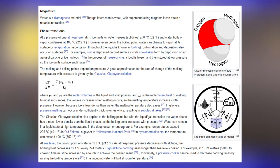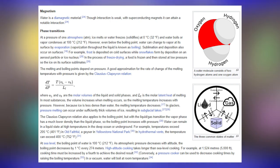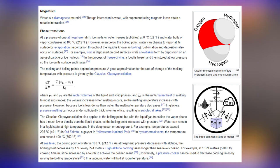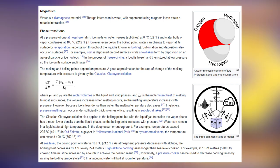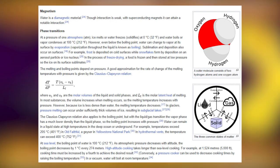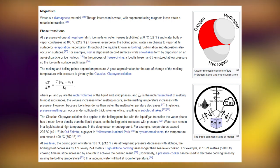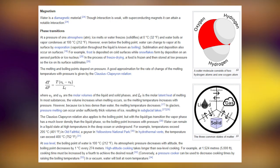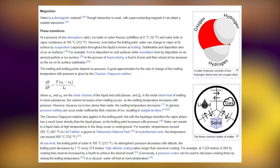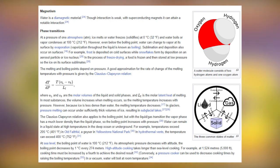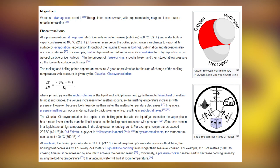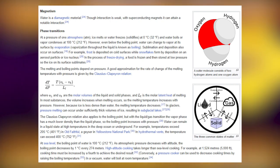The melting and boiling points depend on pressure. A good approximation for the rate of change of melting temperature with pressure is given by the Clausius-Clapeyron relation: dT/dP = T(VL - VS)/LF, where VL and VS are the molar volumes of the liquid and solid phases, and LF is the molar latent heat of melting. Because ice is less dense than water, the melting temperature decreases with pressure. In glaciers, pressure melting can occur under sufficiently thick volumes of ice, resulting in subglacial lakes.